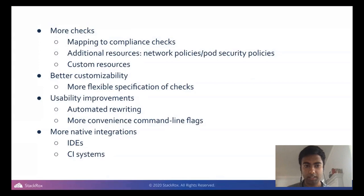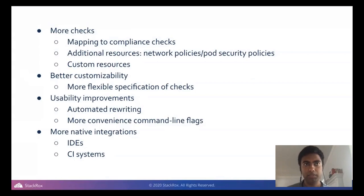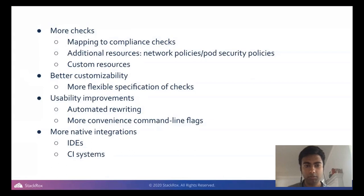We want to consider additional resources we don't yet cover — like network policies and pod security policies. A simple check could be 'does your deployment have a network policy?' and more complex checks could allow fine-grained rules on network policies, like flagging overly broad ones. Another big request is custom resources. Right now all our checks work only on native Kubernetes objects like deployments, services, and daemon sets, but custom resources are becoming bigger and we're figuring out how to support them well.